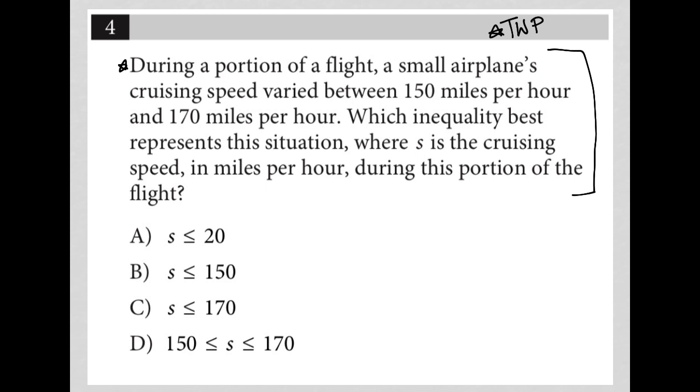So the first sentence here says during a portion of a flight, a small airplane's cruising speed varied between 150 miles per hour and 170 miles per hour.